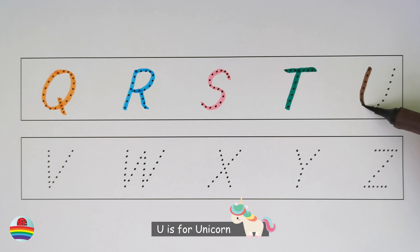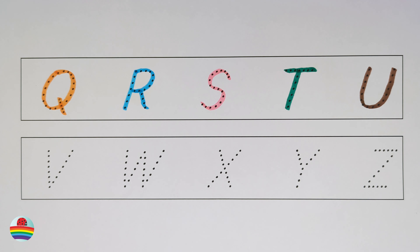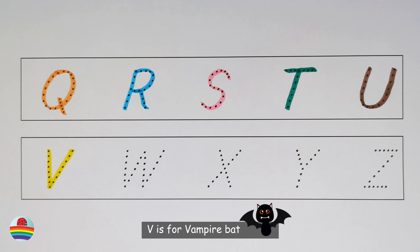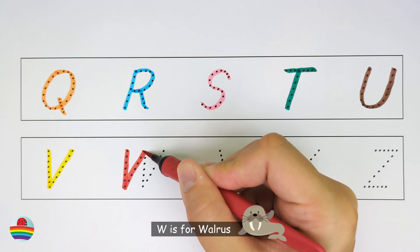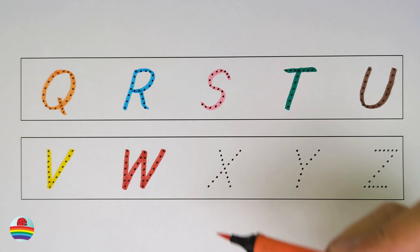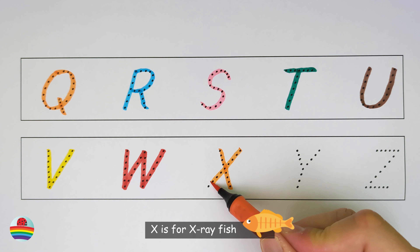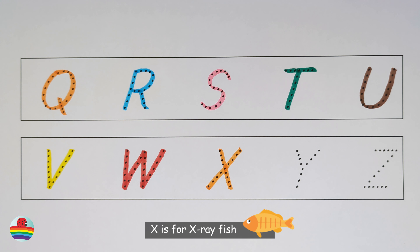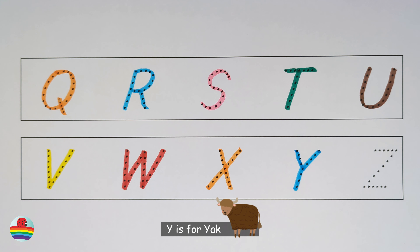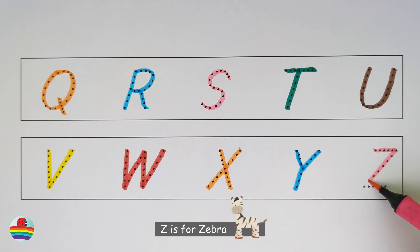U. U is for unicorn. U. V. V is for vampire bat. V. W. W is for walrus. W. X. X is for x-ray fish. X. Y. Y is for yak. Y. Z. Z is for zebra. Z.